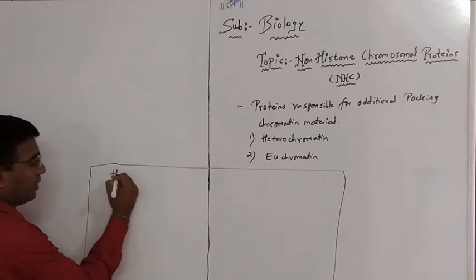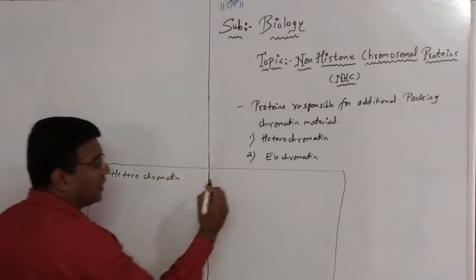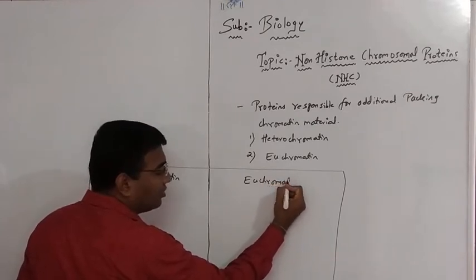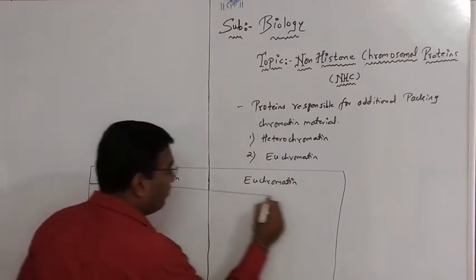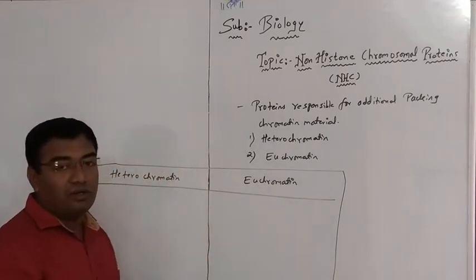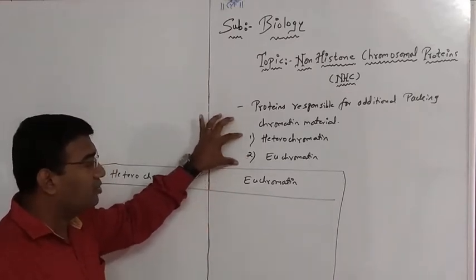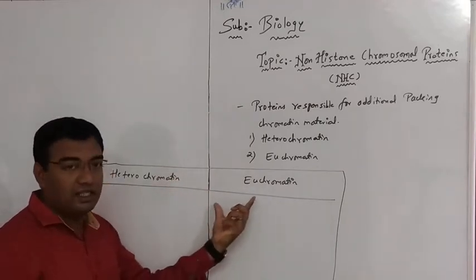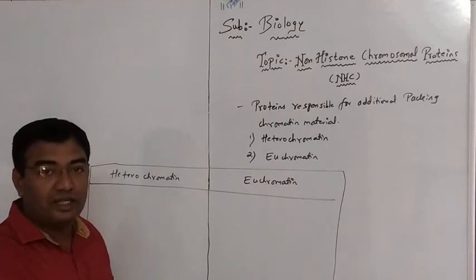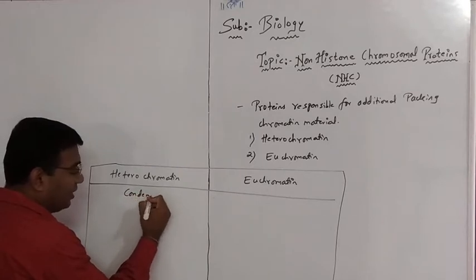We will study in the form of a distinction between heterochromatin and euchromatin — these are the two different kinds of non-histone proteins, NHC. First, heterochromatin: heterochromatin are generally found in a condensed state.